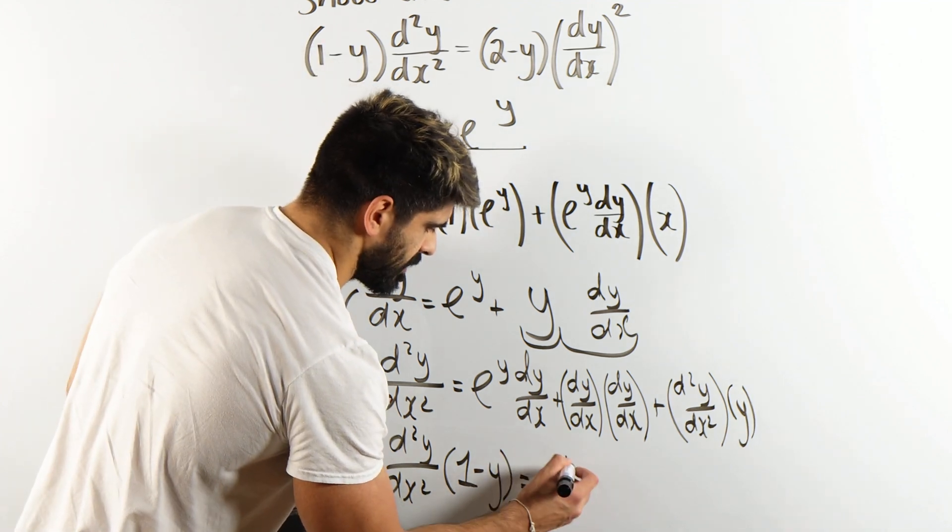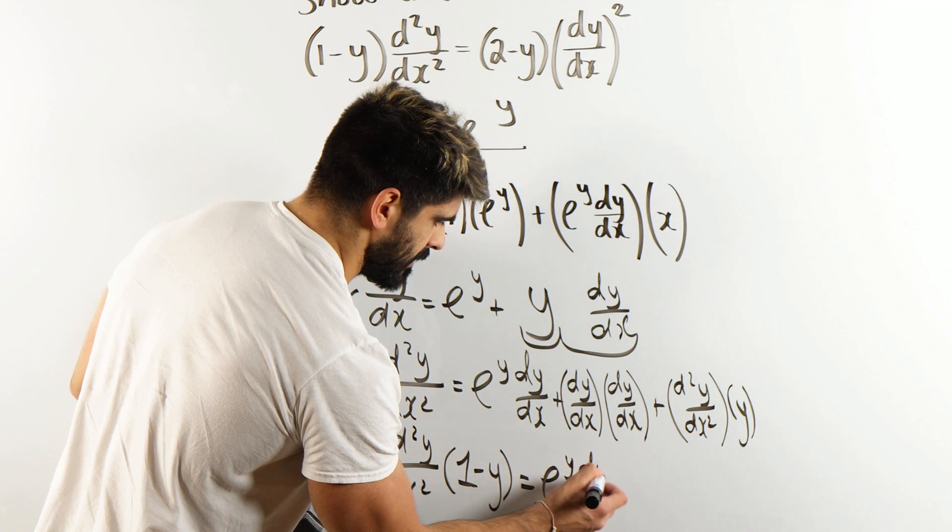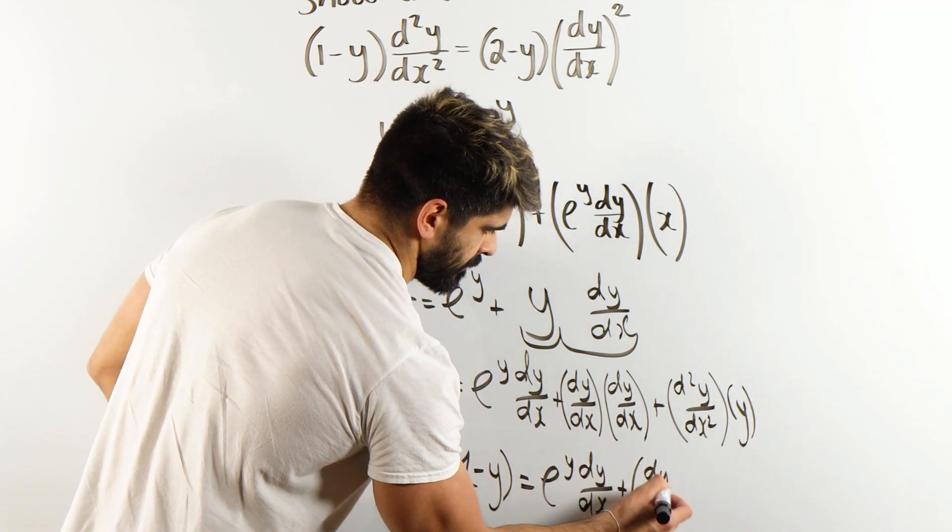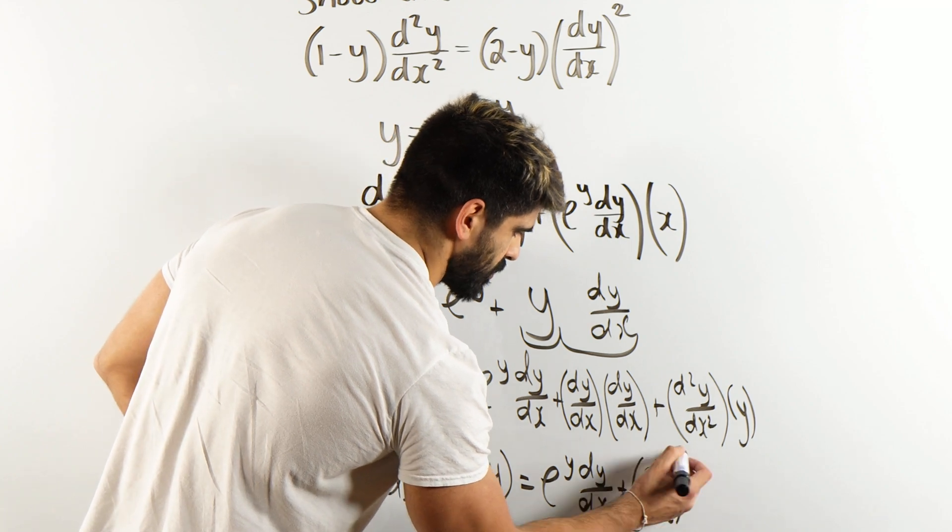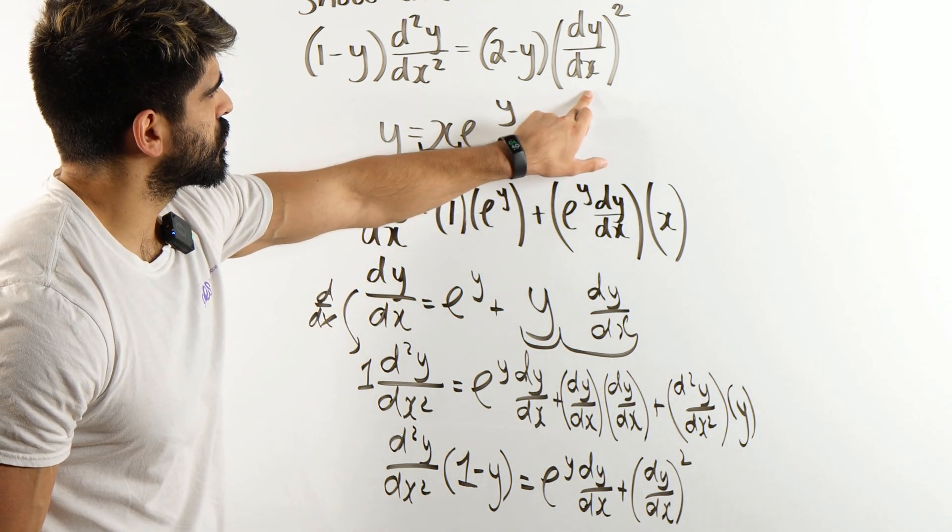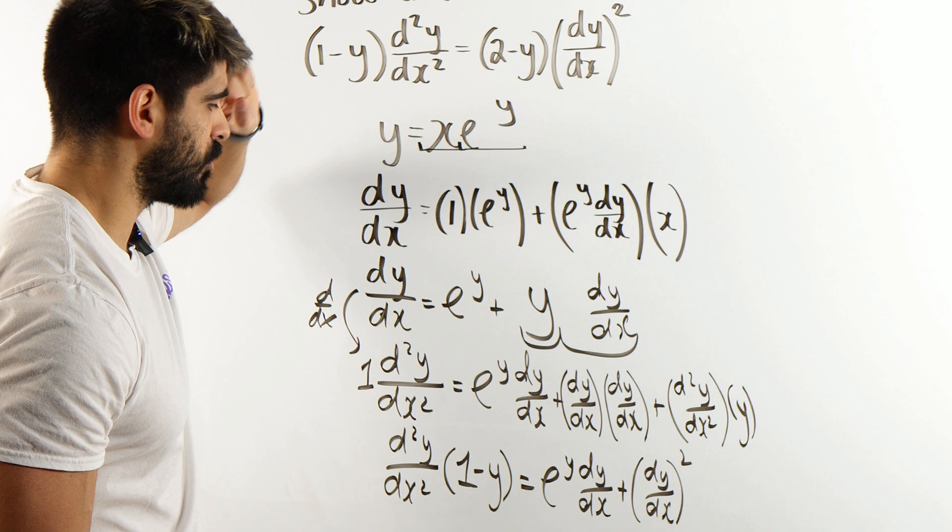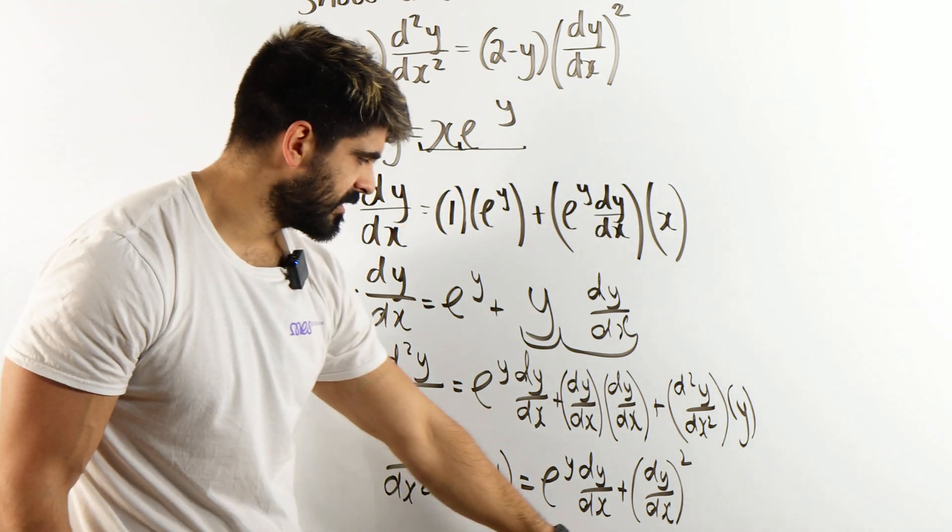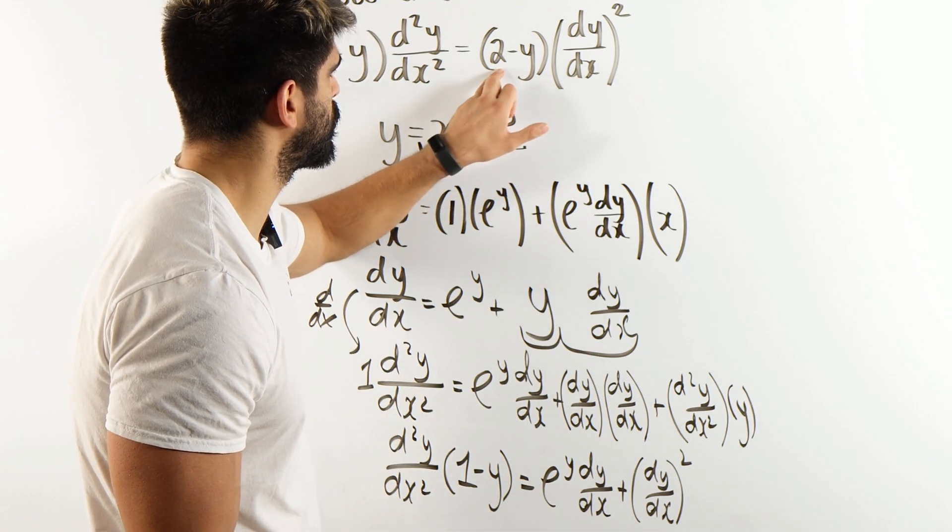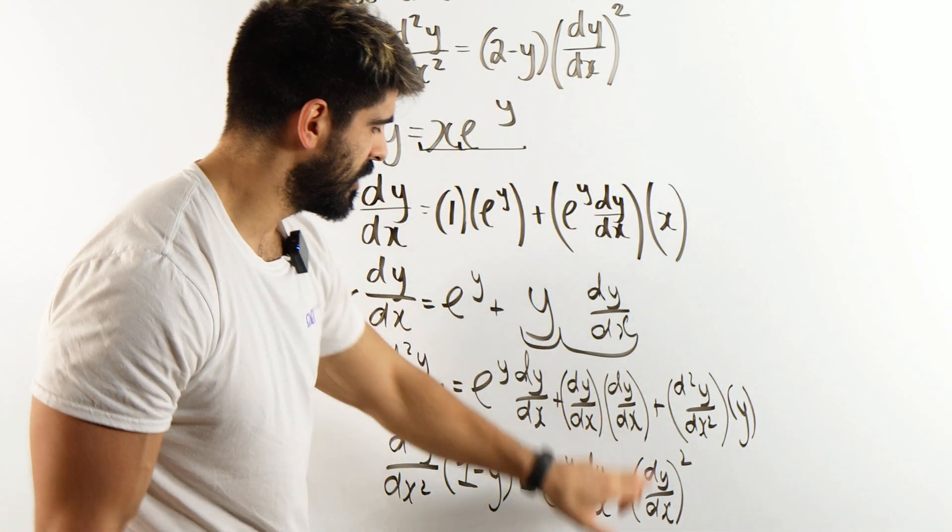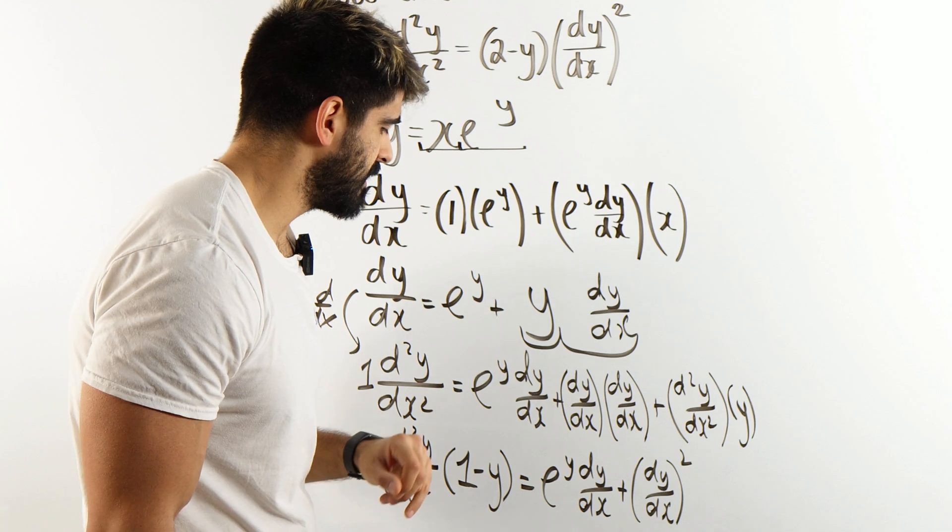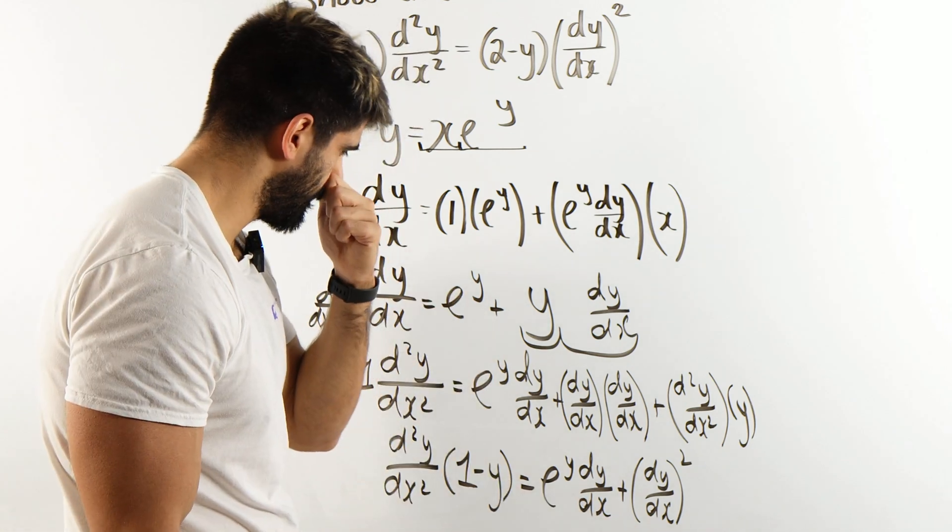So I have e to the y dy/dx plus (dy/dx)². I mean I have (dy/dx)² bracket 2 minus y. Could I factorize somehow? Because if I can factorize this from this, I would need 2(dy/dx)² which I don't actually see right now, minus y lots of (dy/dx)² which again I don't really see right now.